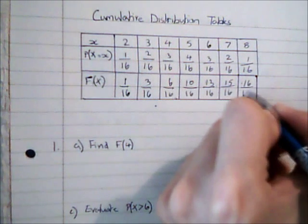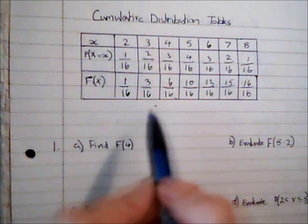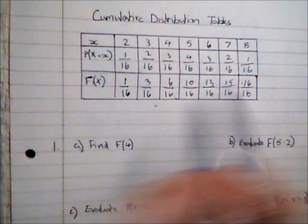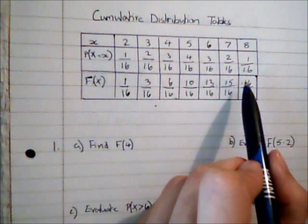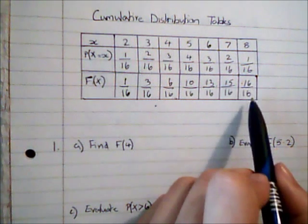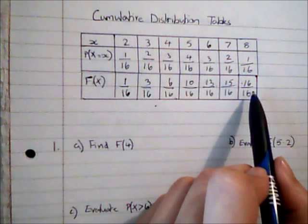I'm just going to leave it all in terms of 16ths for the moment although I could simplify some of these fractions. So by the end, by the time I've got up to x equals 8, that covers all 16 outcomes that are 8 or lower.